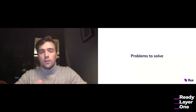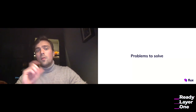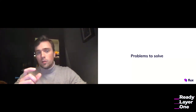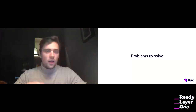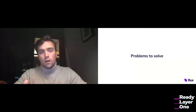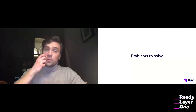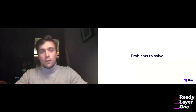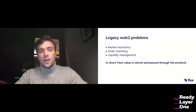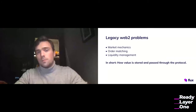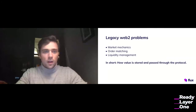Basically, you can think of this as: are we going to build an automated market maker, market making APIs, what are the order books going to look like? In short, it's how value is stored and passes through our Flux protocol. These problems are super interesting, but there is a lot of referential material you can point at while working on these solutions. They've been solved plenty of times and plenty of ways, so I don't want to talk about these problems too much today.